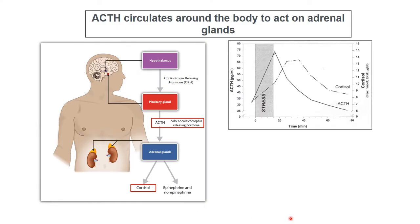That ACTH then acts on the next stage — the adrenal glands. ACTH circulates around the body, but its main target is the adrenal glands. The adrenal glands are called adrenal because they are above the kidneys — 'adrenal' meaning above or next to renal. They sit above the kidneys and have ACTH receptors. ACTH will bind to the adrenal glands and induce the release of various hormones. Epinephrine and norepinephrine are some of those hormones, but the one primarily involved with the stress response that we're most familiar with is cortisol.